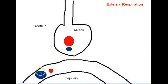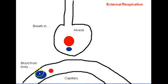The blood coming from the body — in this case specifically from the right side of the heart — is going to have a high partial pressure of carbon dioxide and a low partial pressure of oxygen.